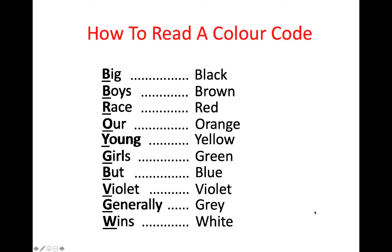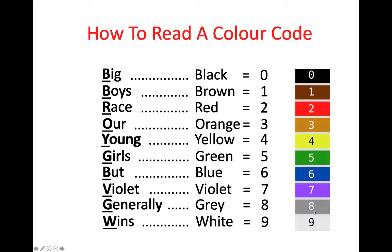Then, assigned with those colours, you have their relevant numbers — so black is equal to 0, and you keep going from brown equals 1 all the way down to white equals 9. And that is a nice way to remember your colour codes, the bands and what values they represent.